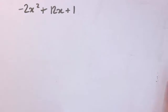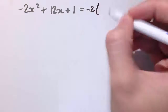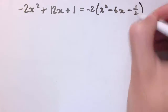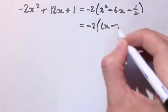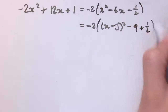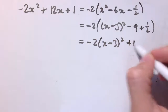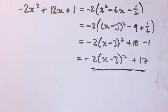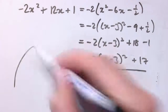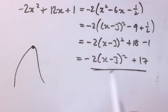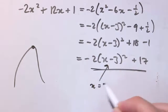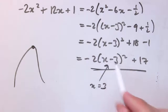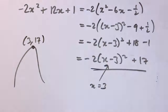Let me do one with a negative quadratic. I'll pull out a factor of minus 2, giving minus 2 times x squared minus 6x minus one half. Completing the square inside gives minus 2 times x minus 3 squared, subtracting 9, plus one half. Multiplying out: minus 2 times x minus 3 squared plus 18 minus 1, so minus 2 times x minus 3 squared plus 17. This is a negative quadratic so it has a maximum. The term minus 2 times x minus 3 squared is always negative or zero, so the biggest it can be is 0, when x equals 3, giving a maximum value of 17. The maximum point is at 3, 17.